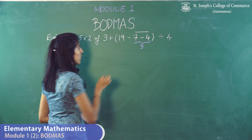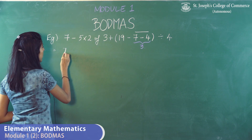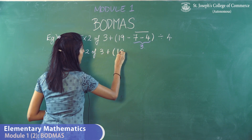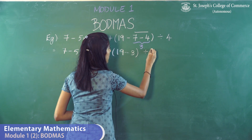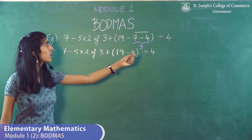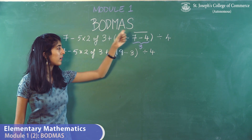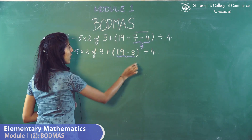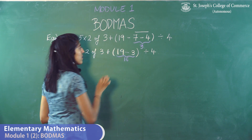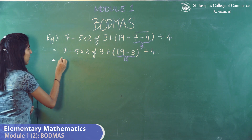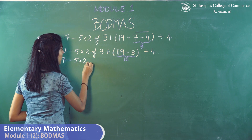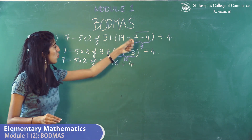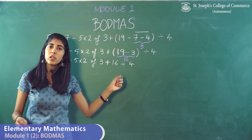7 minus 4 equals 3, so we rewrite the whole thing as 7 minus 5 into 2 of 3 plus 19 minus 3 divided by 4 — we've only removed the bar bracket. The next bracket is the curved bracket, so we solve what's inside: 19 minus 3 is 16. We rewrite as 7 minus 5 into 2 of 3 plus 16 divided by 4, removing the brackets and writing the direct answer 16.